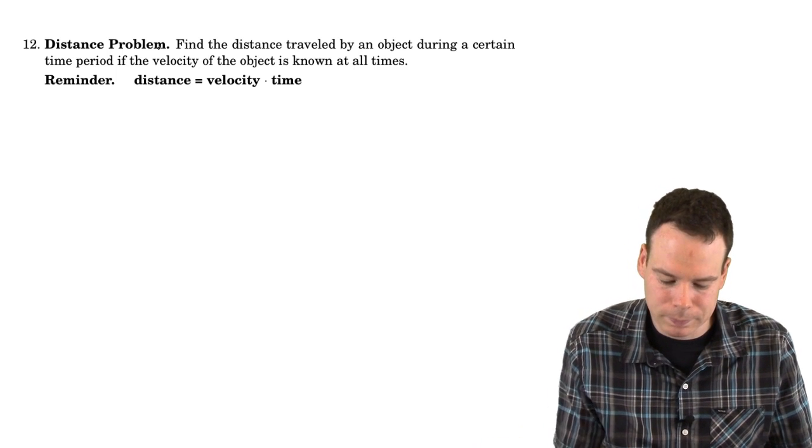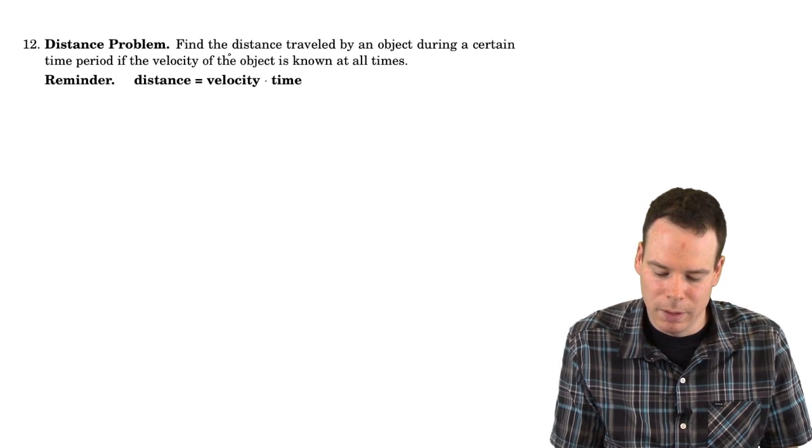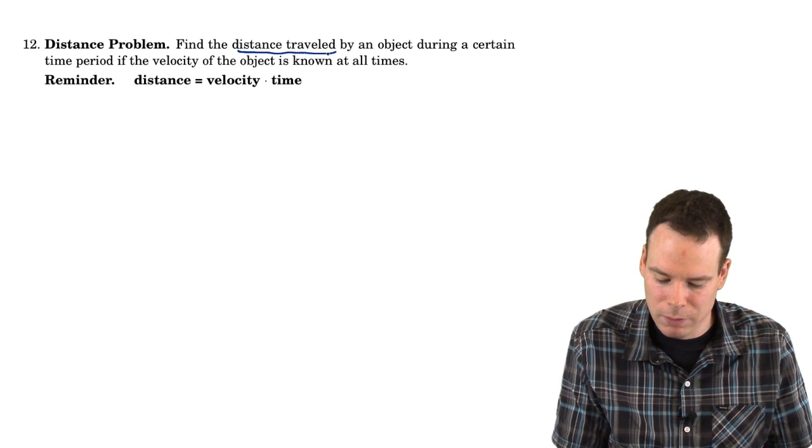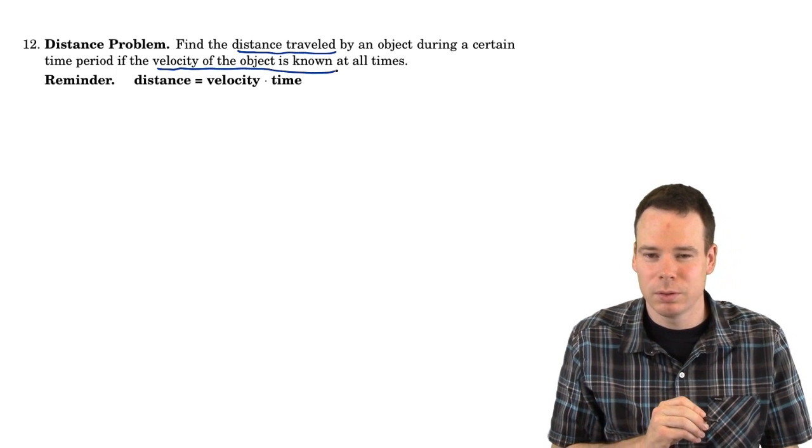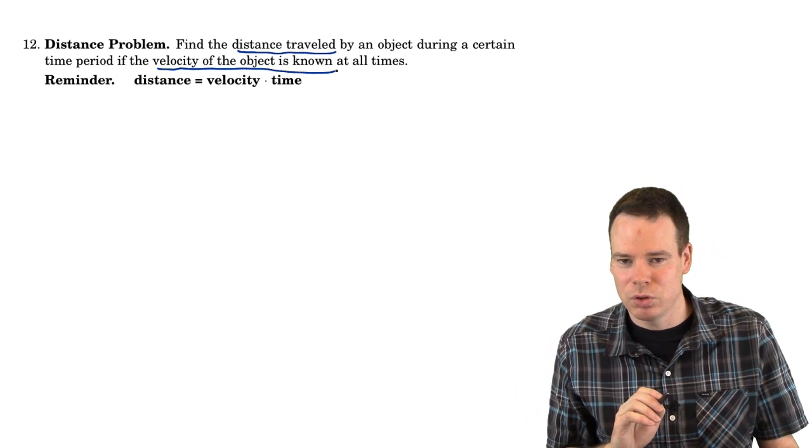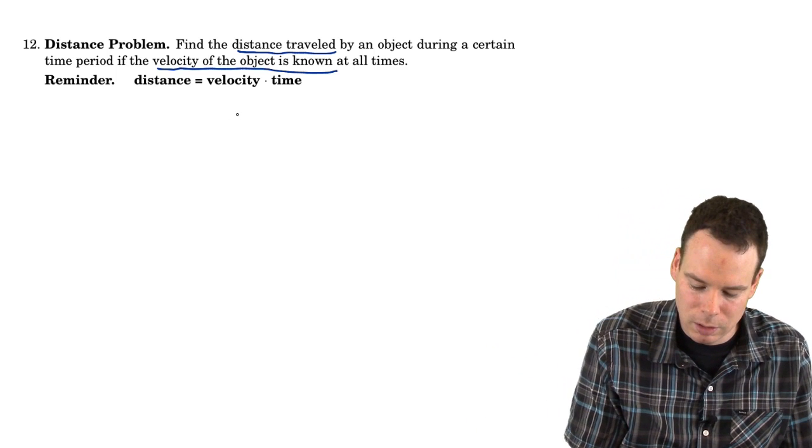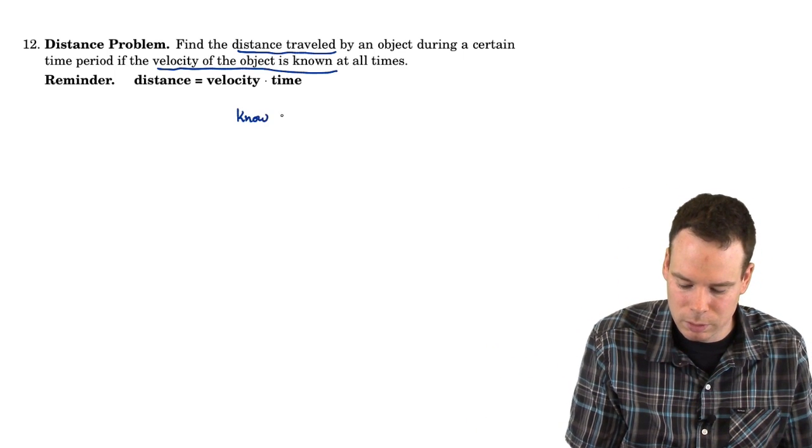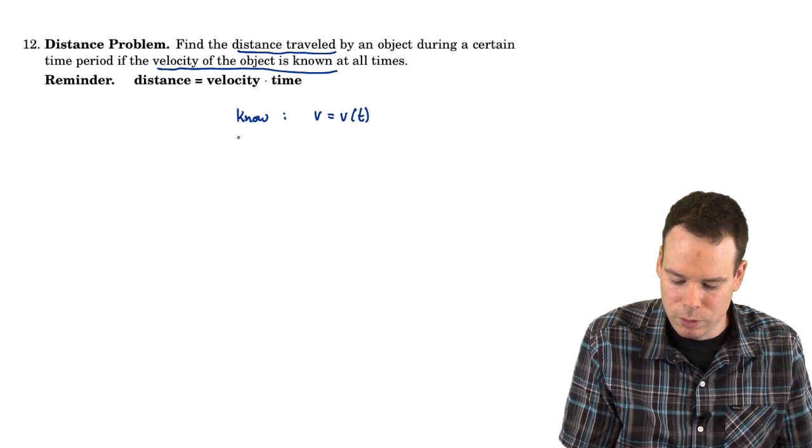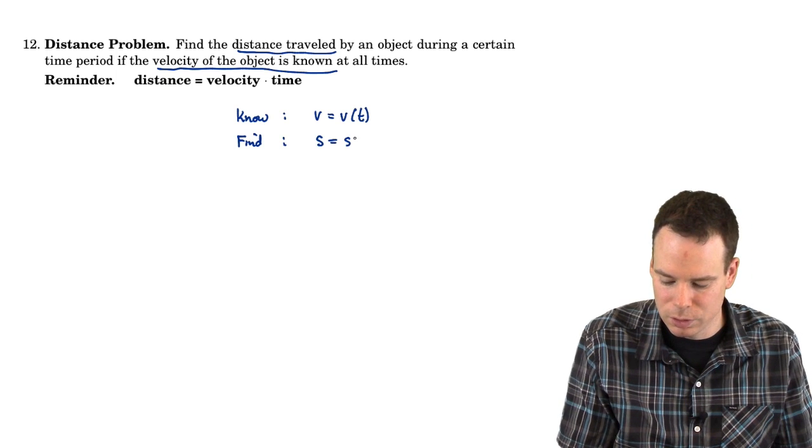What about this? The distance problem. Find the distance traveled if we know its velocity. So it's the opposite question. Now I know the velocity, can I find the distance traveled or its position? So we know the velocity function. We want to find the position function.